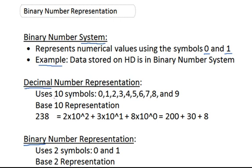So first let's take a look at the decimal number system. The decimal number system uses ten different symbols — those symbols being 0, 1, 2, and so on all the way to 9. Since we have ten symbols, this is also known as base ten representation. In decimal, we represent numbers using these ten symbols as sums of powers of ten.